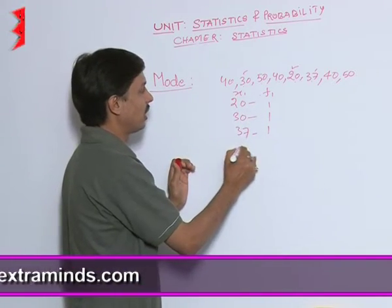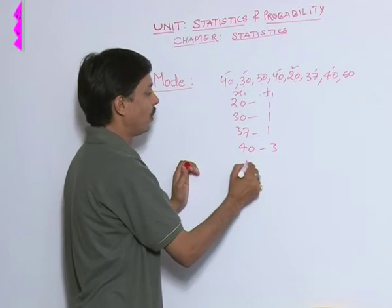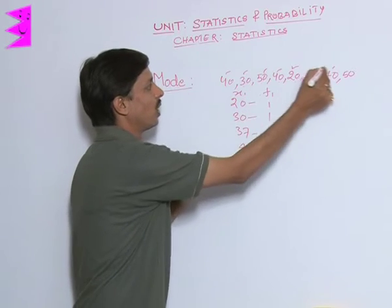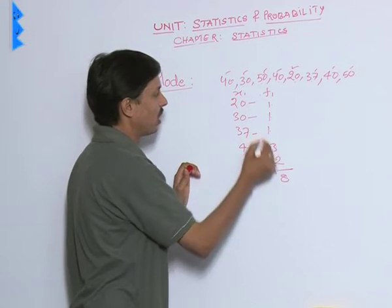Now, after 30 come to 40. Once, twice and thrice, 3. Then 50 how many times? Scored once and twice. So 1, 2, 3, 3, 6 plus 2, 8.